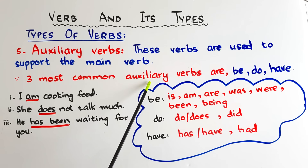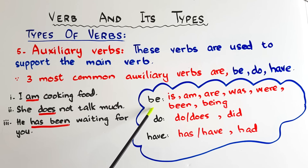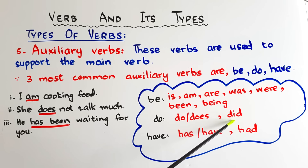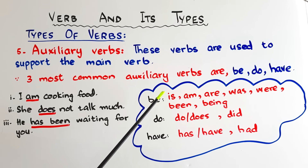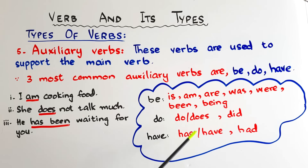The three most common auxiliary verbs are 'be,' 'do,' and 'have' in their different forms. The different forms of 'be' are: is, am, are, was, were, been, and being. Different forms of 'do' are: do, does, and did. And 'have' has the forms: has, have, and had. You may find the be-verb as a main verb in many sentences, but if there is another verb after it, it becomes the helping verb and helps us identify the tense.